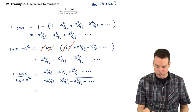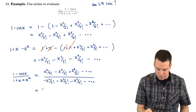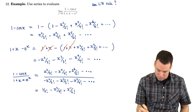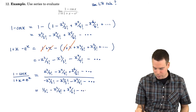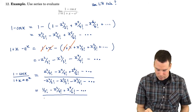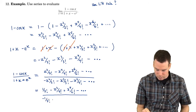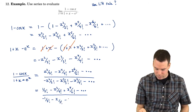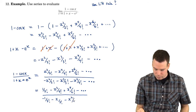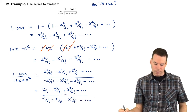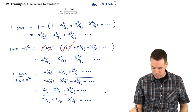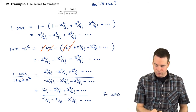So I can factor an x squared out of everything in the top and everything in the bottom, then cancel those common factors. Getting rid of an x squared from everything, we're left with: the top becomes 1 over 2 factorial minus x squared over 4 factorial plus x to the 4th over 6 factorial minus... and the bottom becomes negative 1 over 2 factorial minus x over 3 factorial minus x squared over 4 factorial minus... This is valid when x is not 0, since the original wasn't defined at 0.